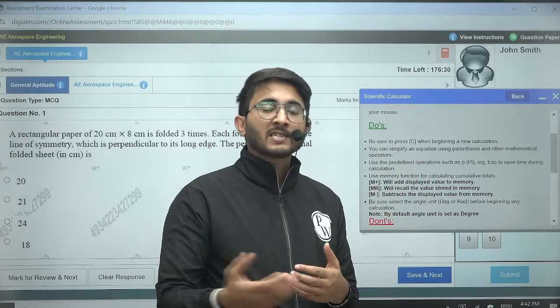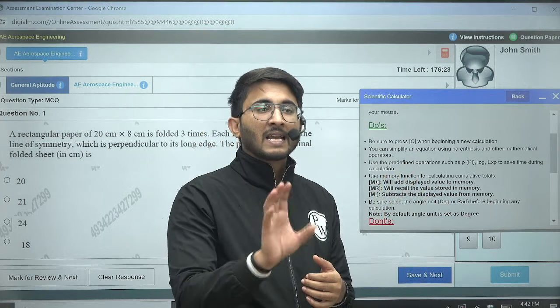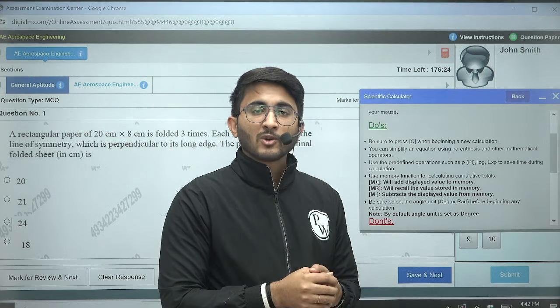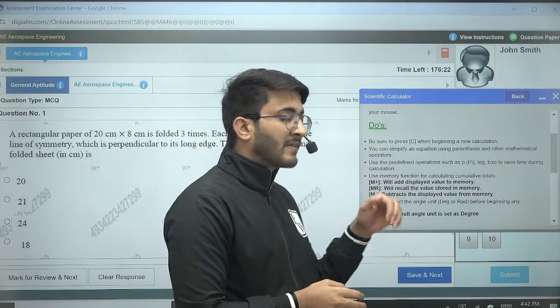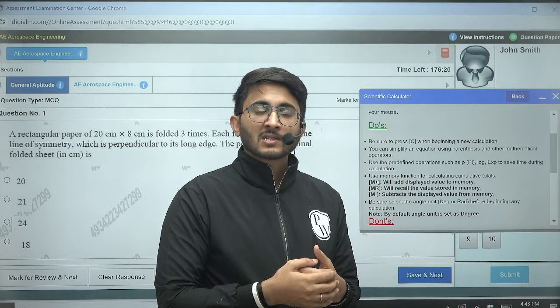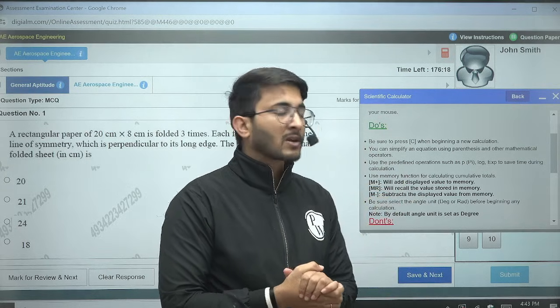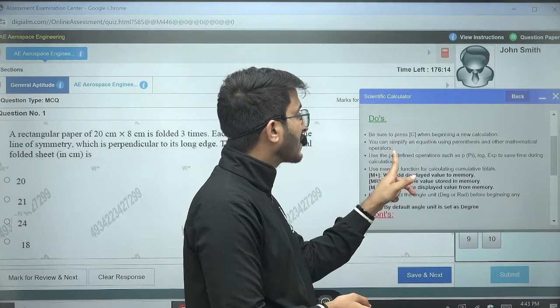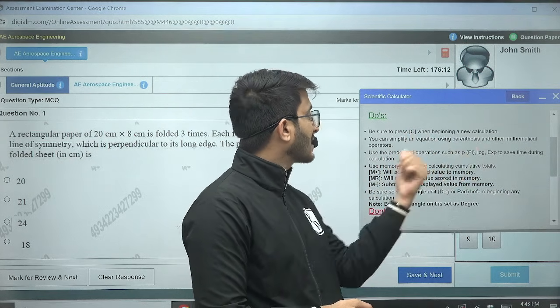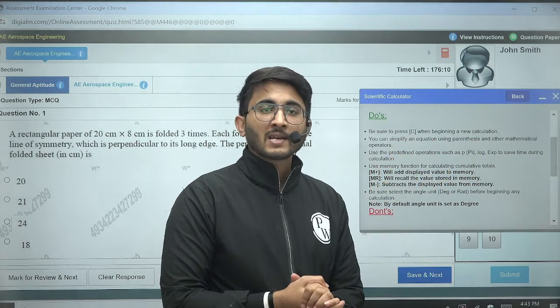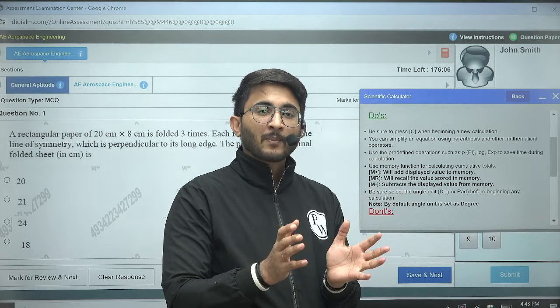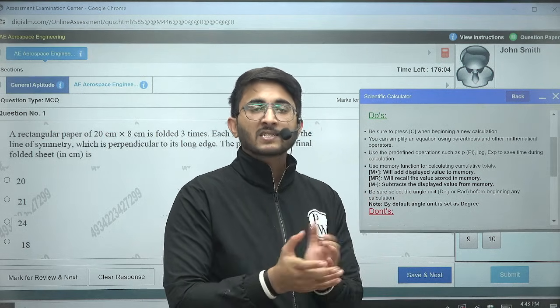Sometimes guys, while solving the questions, we save some data by utilizing some tab. So if already something is saved and we click by mistake, then maybe the previous data will also be included in new calculations. That's why whenever you start solving any question and you start using the virtual calculator, always try to press C. And you can simplify an equation using parenthesis and other mathematical operations.